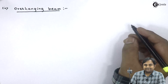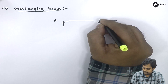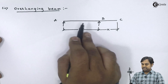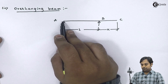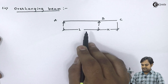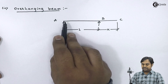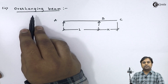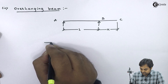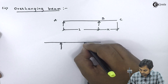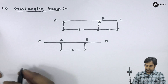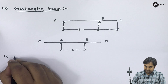Next is the overhanging beam. If we have a beam which is supported at point A and point B, the BC portion of the beam is hanging. The total length of the beam is L plus X, so only the L portion is supported and the X portion is hanging — that kind of beam is called an overhanging beam. In an overhanging beam, it can hang from one side, or you can even have an overhanging beam where it overhangs from both sides.